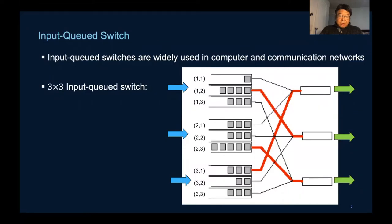At each time slot, only one queue for each input port and one for each output port can be simultaneously transmitted, just like the one illustrated in red.